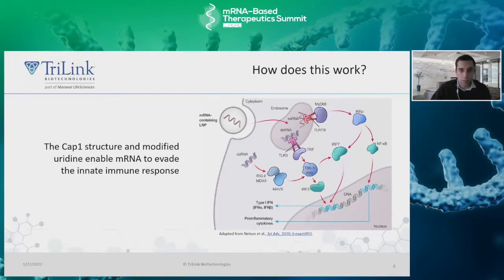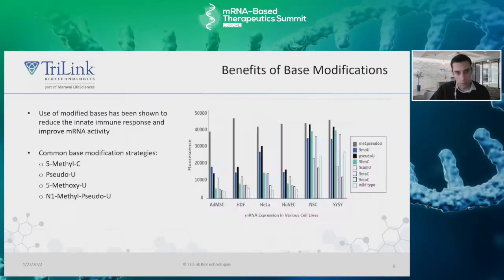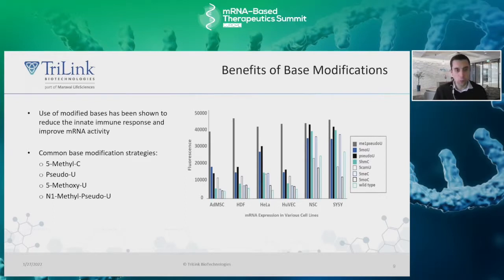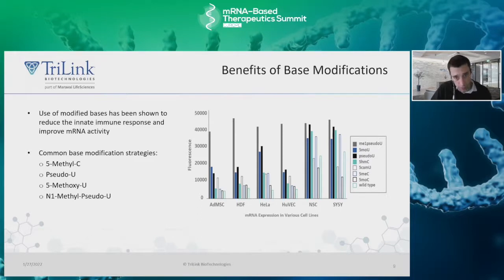Now let's get into some in vitro efficacy data of modified mRNA. This slide depicts GFP fluorescence in multiple cell lines. In each case, the GFP has been synthesized with a different modified nucleotide. You can see that the modified uridines all perform quite well, most notably against their wild-type counterparts as well as other modified nucleotides, showing evidence that modified uridines can play a significant role in mitigating the innate immune activation often seen when using wild-type uridine.